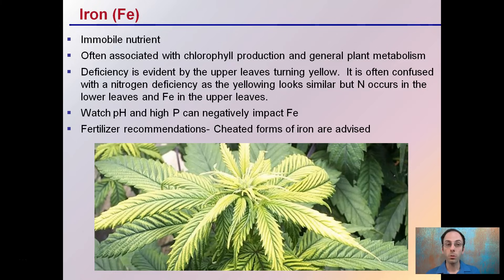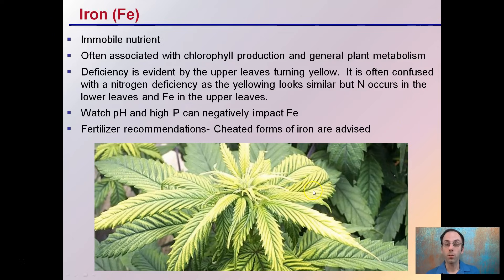Iron is an immobile nutrient often associated with chlorophyll production and overall plant metabolism. Deficiency is evident by the upper leaves turning yellow, and is often confused with nitrogen deficiency since the yellowing looks similar — but nitrogen deficiency occurs in the lower leaves, while iron deficiency occurs in the upper leaves. Watch the pH, as particularly high phosphorus can negatively impact iron availability to the plant. Chelated forms of iron are advised to correct this potential deficiency.